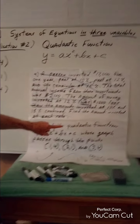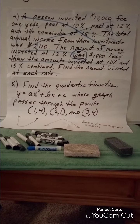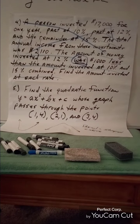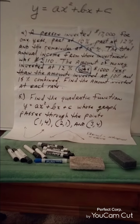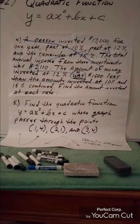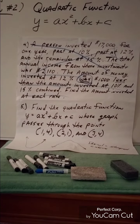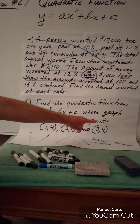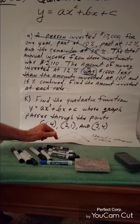Here's the given problem: Find the quadratic function y = ax² + bx + c — they're giving us the model — whose graph passes through the points (1, 4), (2, 1), and (3, 4).